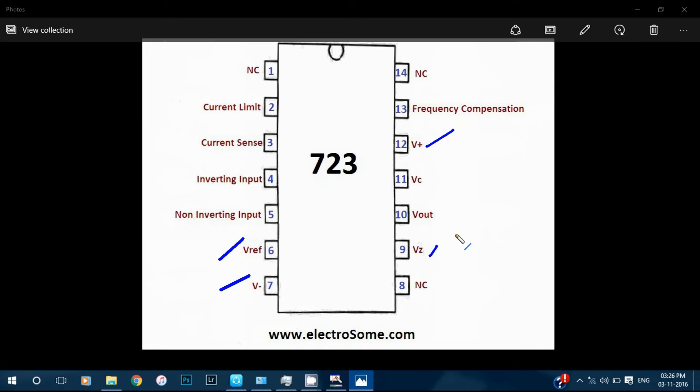The ninth pin is VZ. It is the anode of the Zener diode whose cathode is connected to the output terminal. It is usually used for making negative regulators.